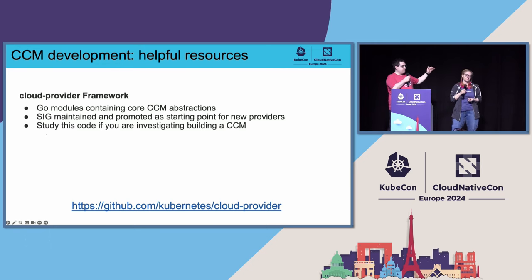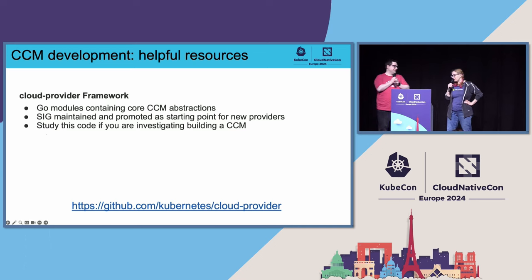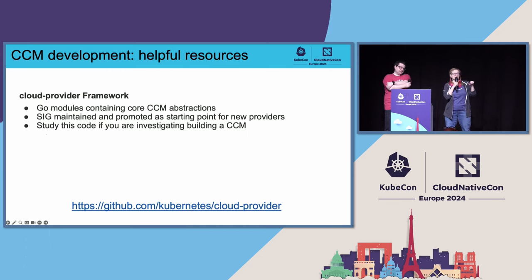Then there's the framework itself — Go modules containing the core cloud controller manager, which is what the SIG maintains. This is the code you need to study to implement a CCM. You might look at the URL and think this is the official cloud provider and you don't need to look at other SIGs — but this is just an instructive sample. It's not the one you can run, because we're moving everything out of tree, so there won't be a singular one.